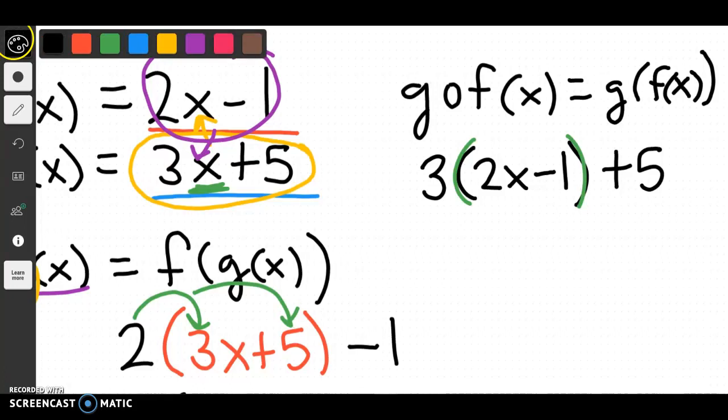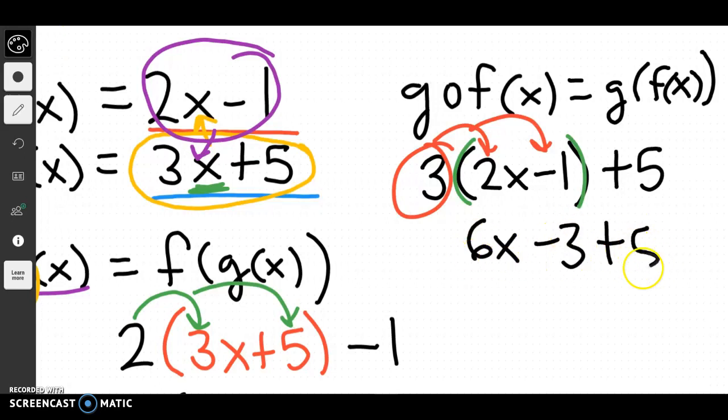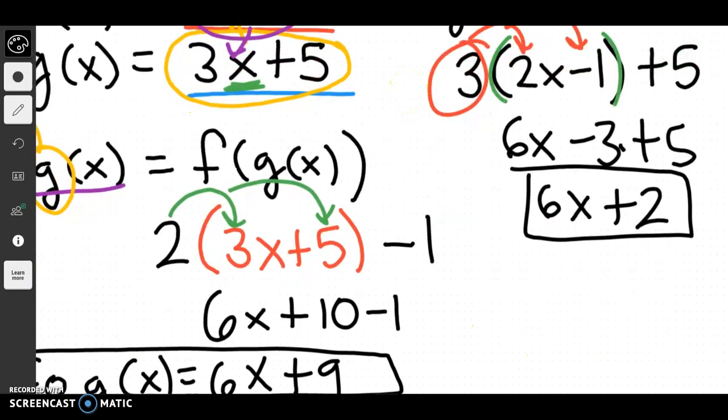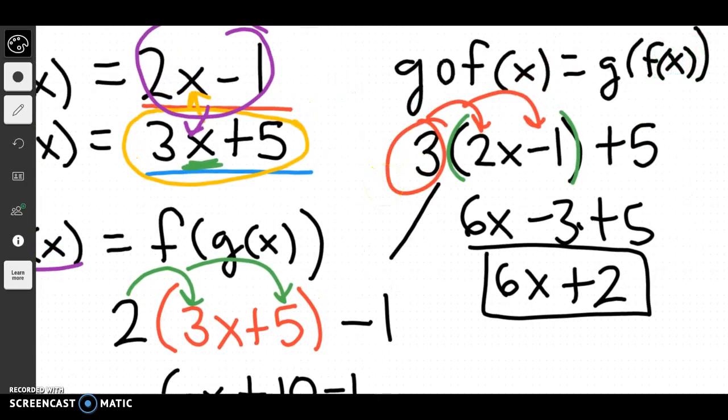Again, we would want to distribute this. And I would get 6x minus 3, plus 5, which would give me 6x plus 2. And as you can see, our other answer was 6x plus 9 and 6x plus 2. So it does matter on the order in which we plug which function into the other. Let's try a couple more examples.